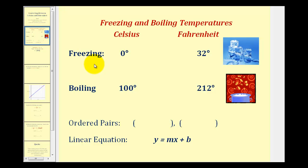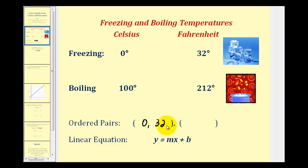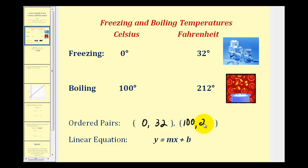For example, the freezing temperature for Celsius is zero degrees and the freezing temperature for Fahrenheit is 32 degrees. We can represent this information as a point or an ordered pair — this would be the point (0, 32). The boiling temperature for Celsius is 100 degrees and for Fahrenheit is 212 degrees, giving us the ordered pair (100, 212).